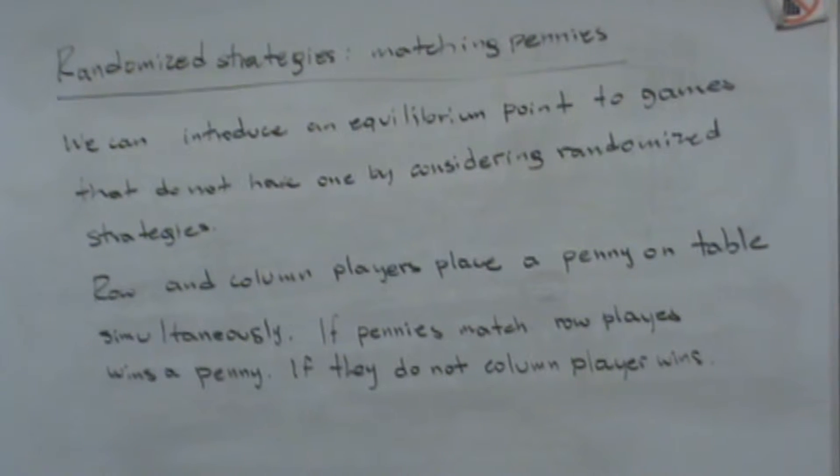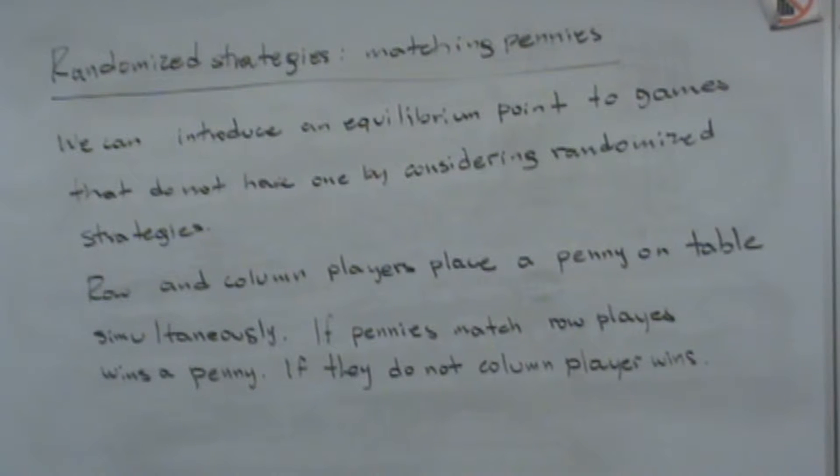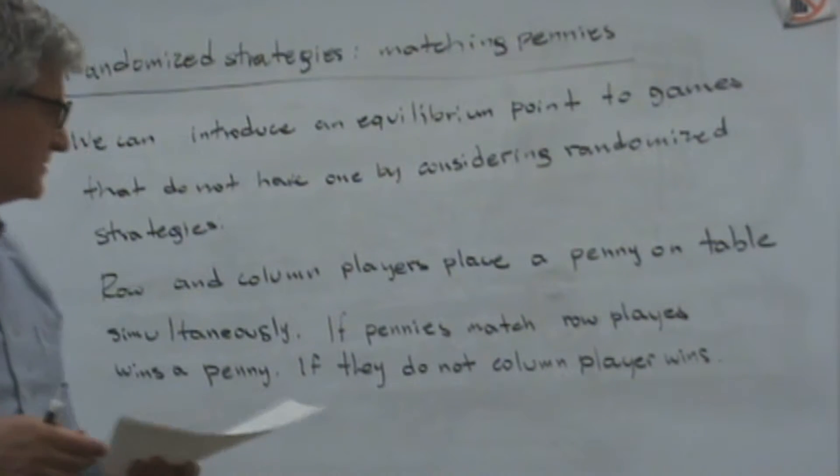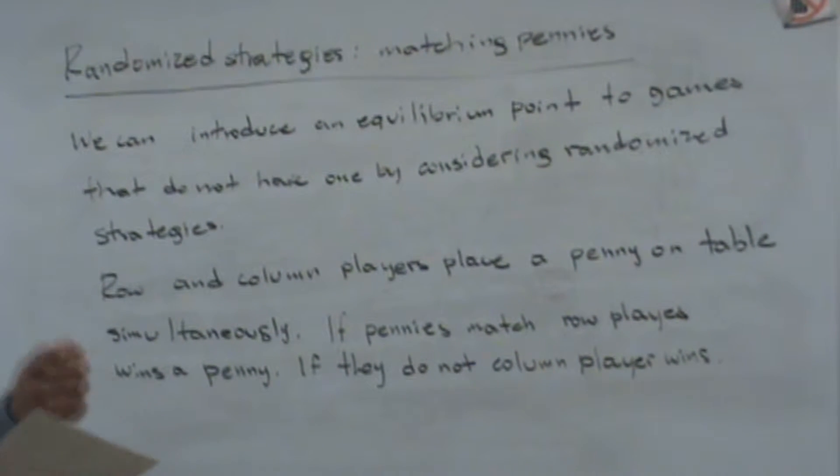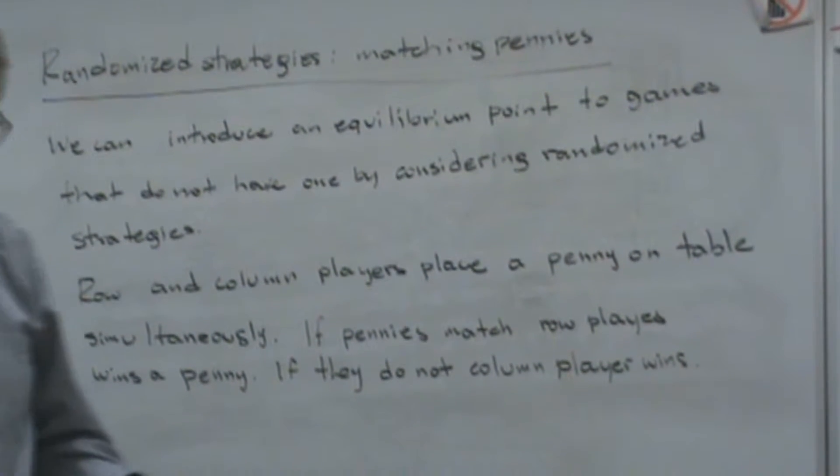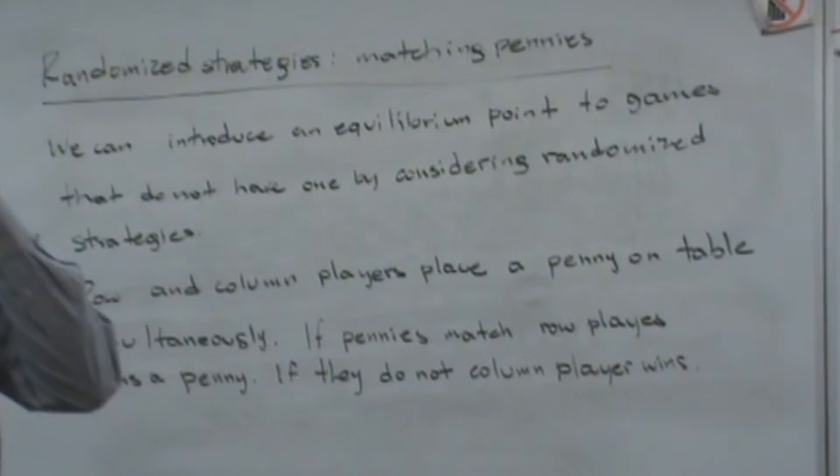A quick morning we said that there are games without an equilibrium point, so we can introduce an equilibrium point if we add one strategy which is made in a randomized strategy, selecting one option 50% of the time and the rest 50% of the time the other option.